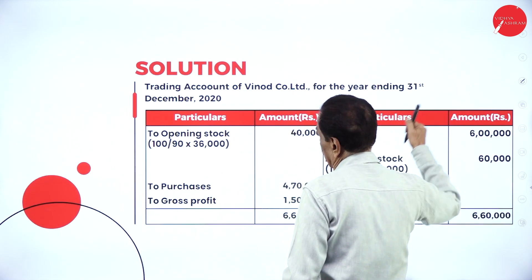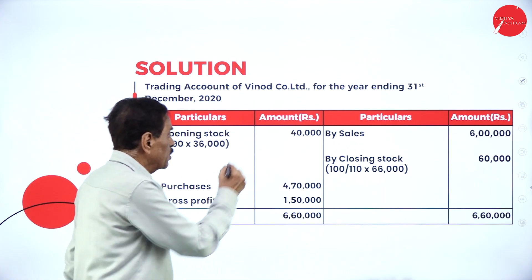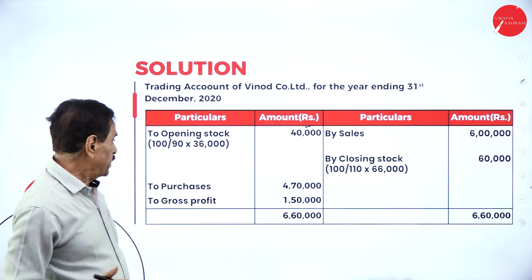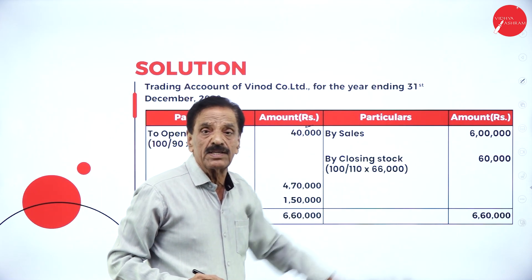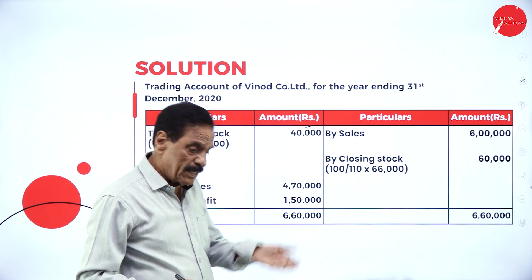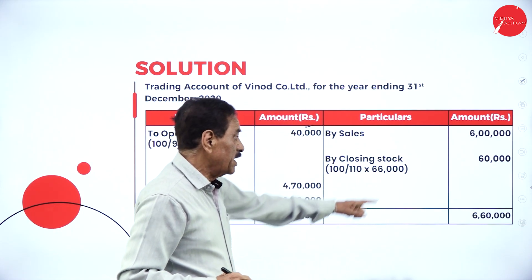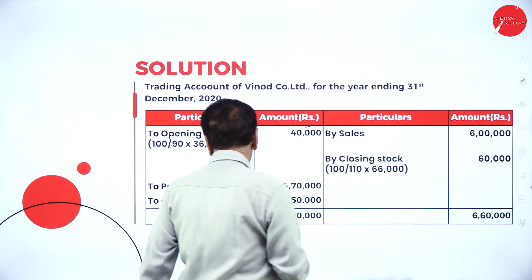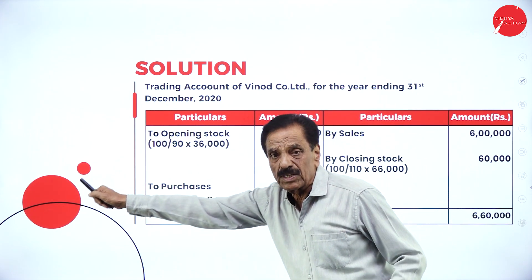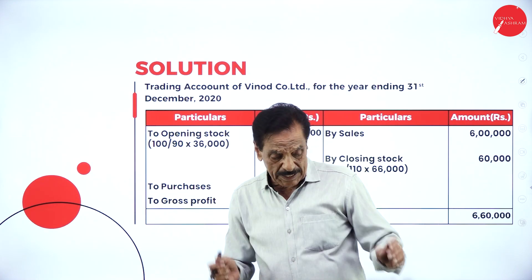In the trading account for the year ended 31st December 2020: the opening stock was Rs. 36,000, which represents 90%, so the original value is Rs. 40,000. Purchases during the year: Rs. 4,70,000. Sales: Rs. 6,00,000. The closing stock was valued at 110 (cost plus 10%), so to find the original: 100/110 × 66,000 = Rs. 60,000. The total comes to Rs. 6,60,000 and the gross profit is Rs. 1,50,000. The opening stock was undervalued; the closing stock was overvalued — both have been corrected.